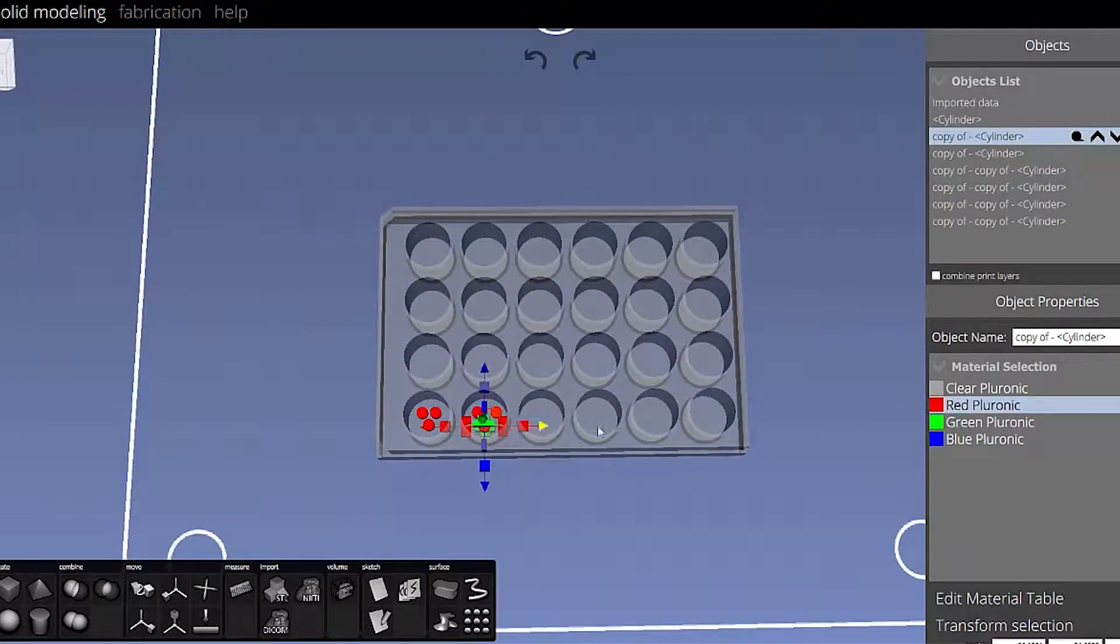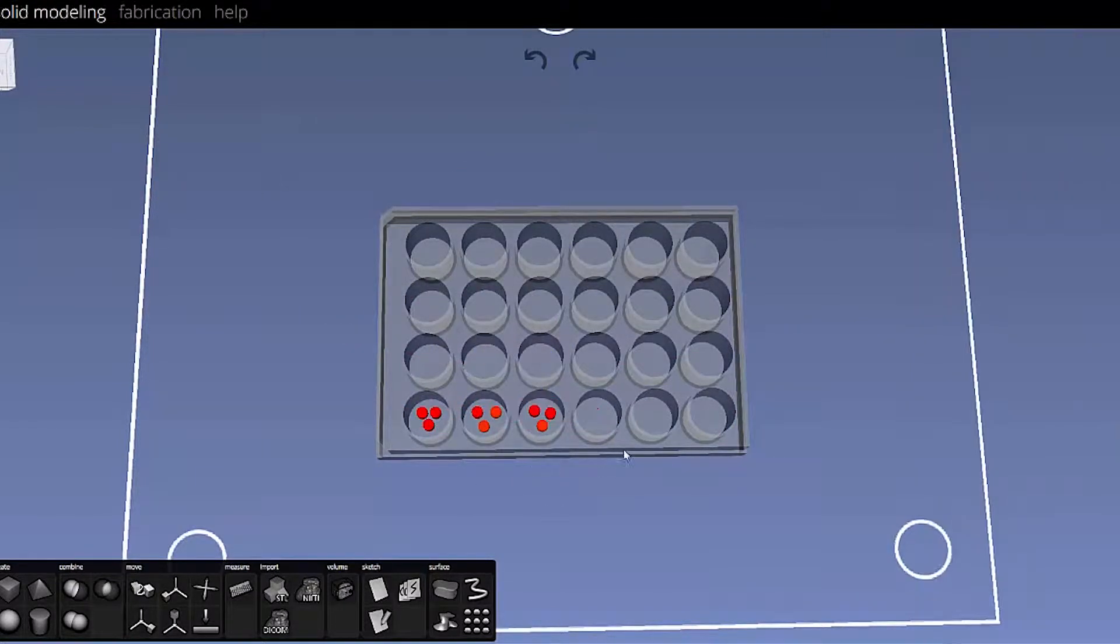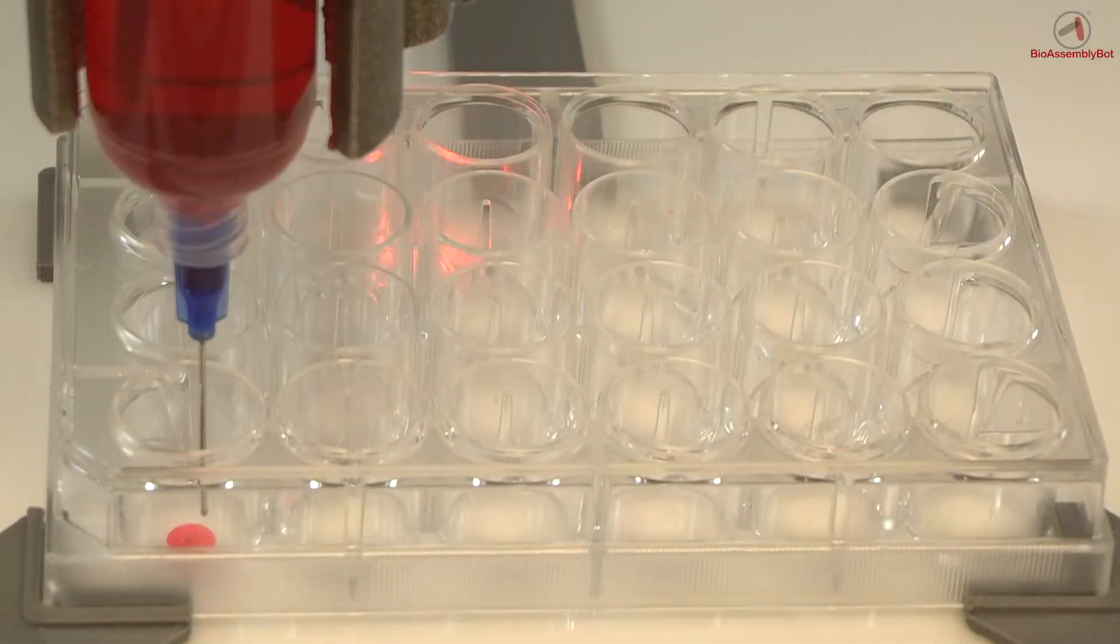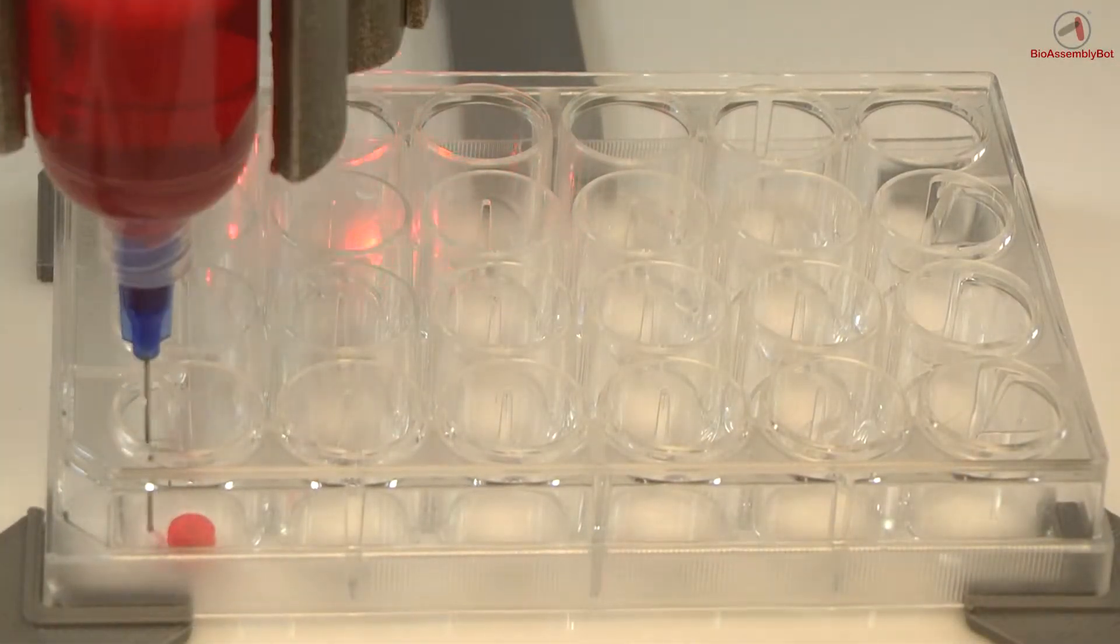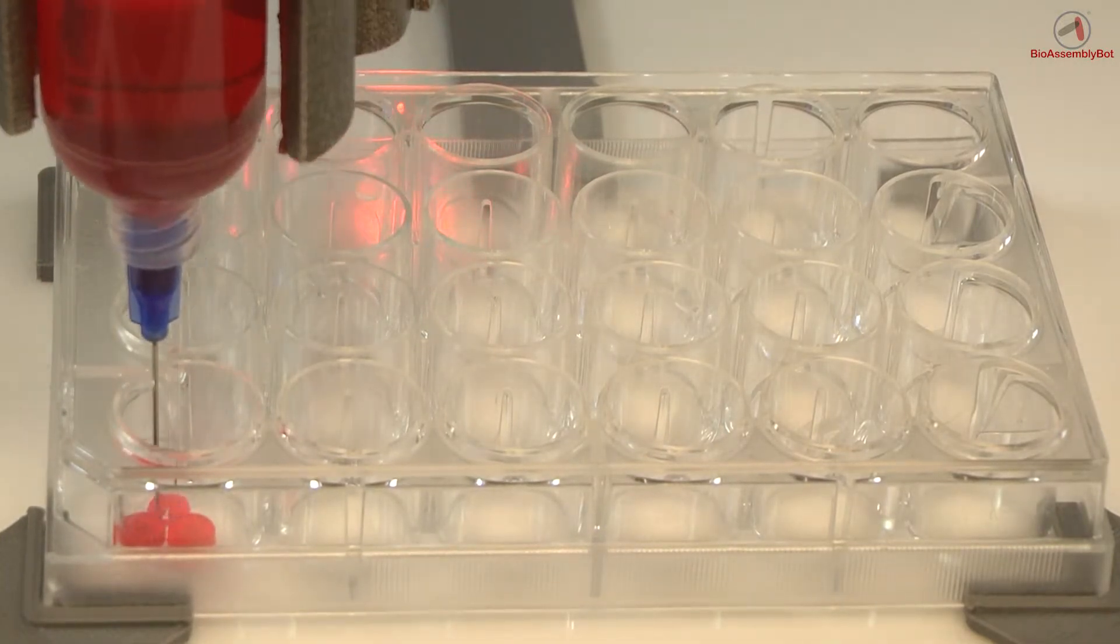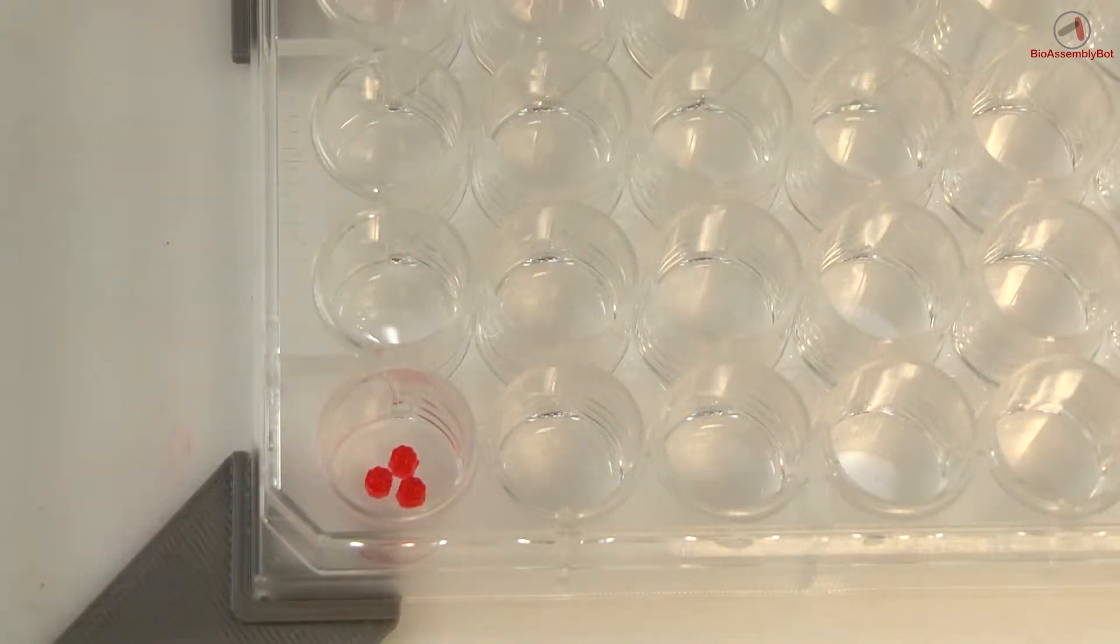This particular example demonstrates printing different tissue models within an assay plate, in this case a 12-well plate. The first example is printing three different tissue constructs or compartments - this could be epithelial cells, cardiomyocytes, whatever the case may be.